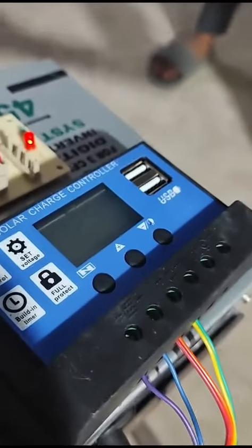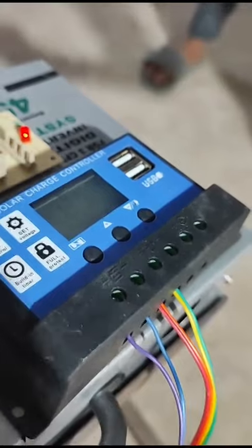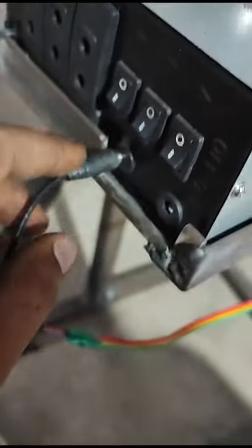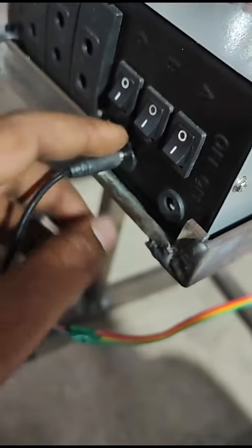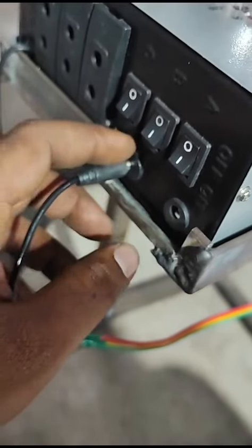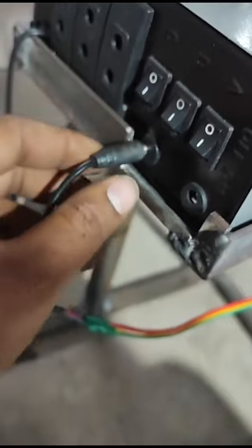Whatever voltage is generated can be shown in the charge controller. This charge controller is connected to the adapter terminal to the battery. The battery gets charged whenever it starts to rotate.